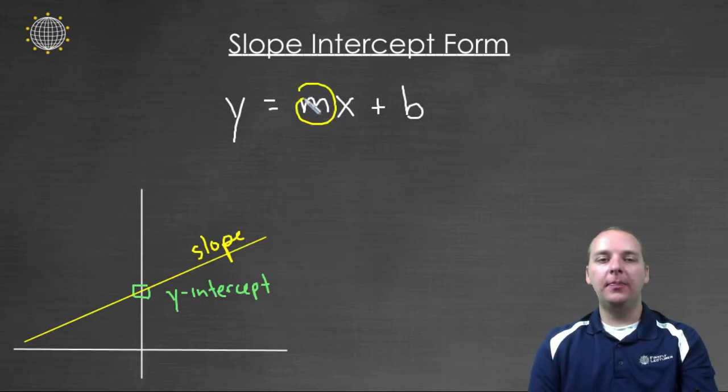The m, this number, the coefficient of the x, that's going to be the slope of your line. And so if it's 2x, then the slope of your line will be 2. If it says negative 5x, the slope will be negative 5.